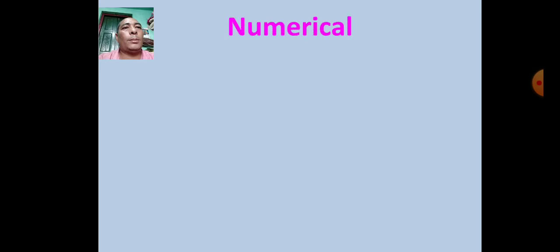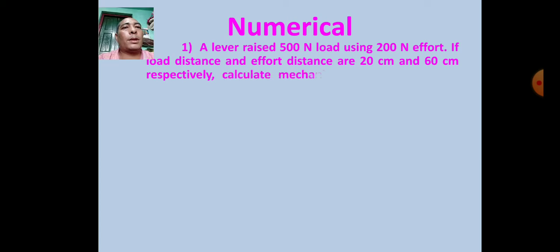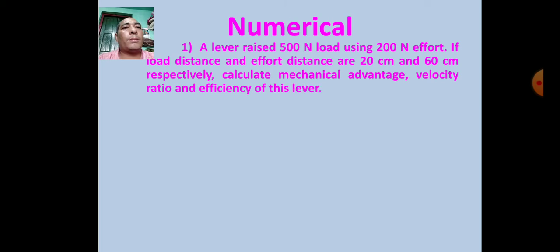Numerical 1: A lever raised a 500 Newton load using 200 Newton effort. If load distance and effort distance are 20 cm and 60 cm respectively, calculate the mechanical advantage, velocity ratio, and efficiency of this lever.